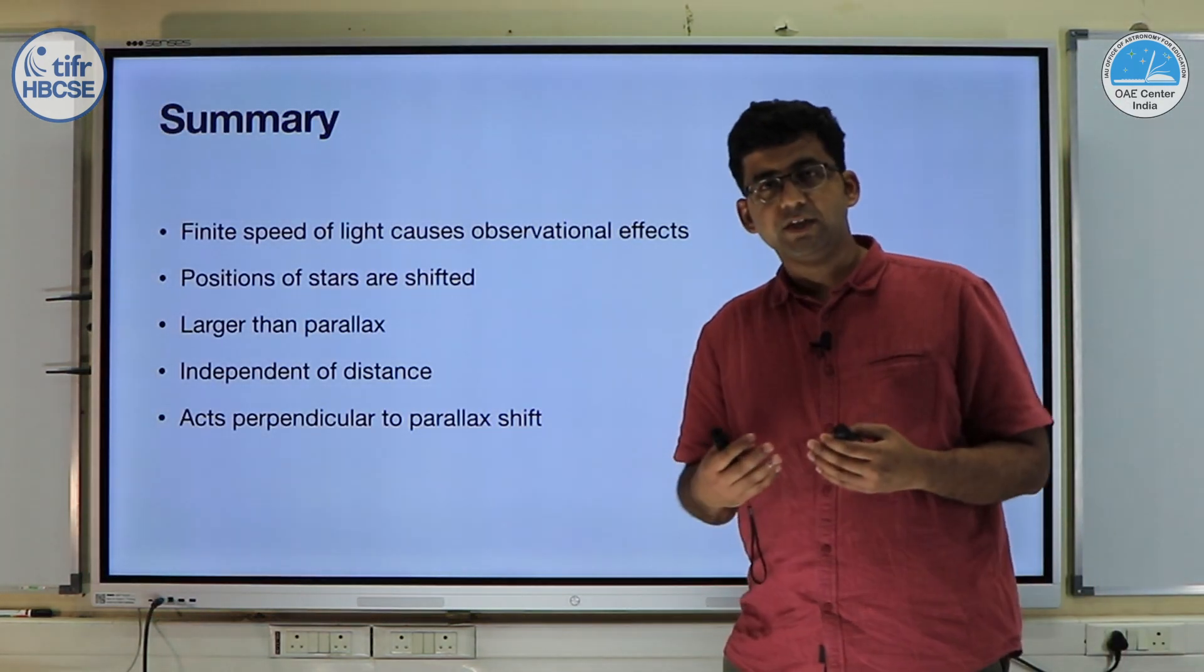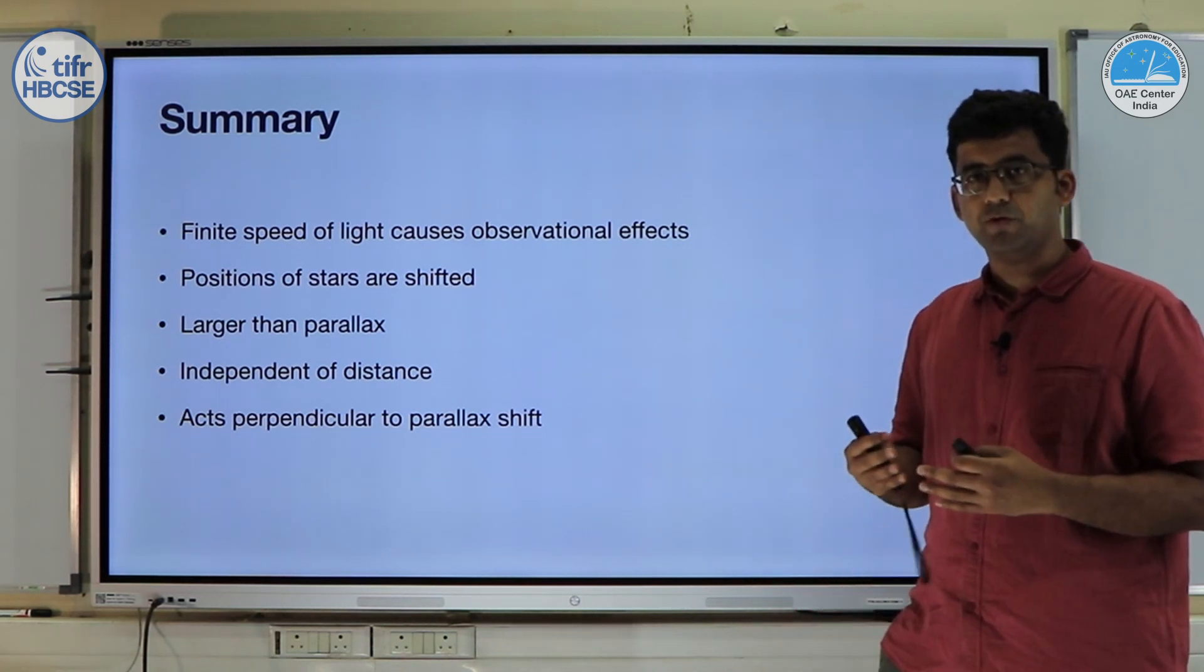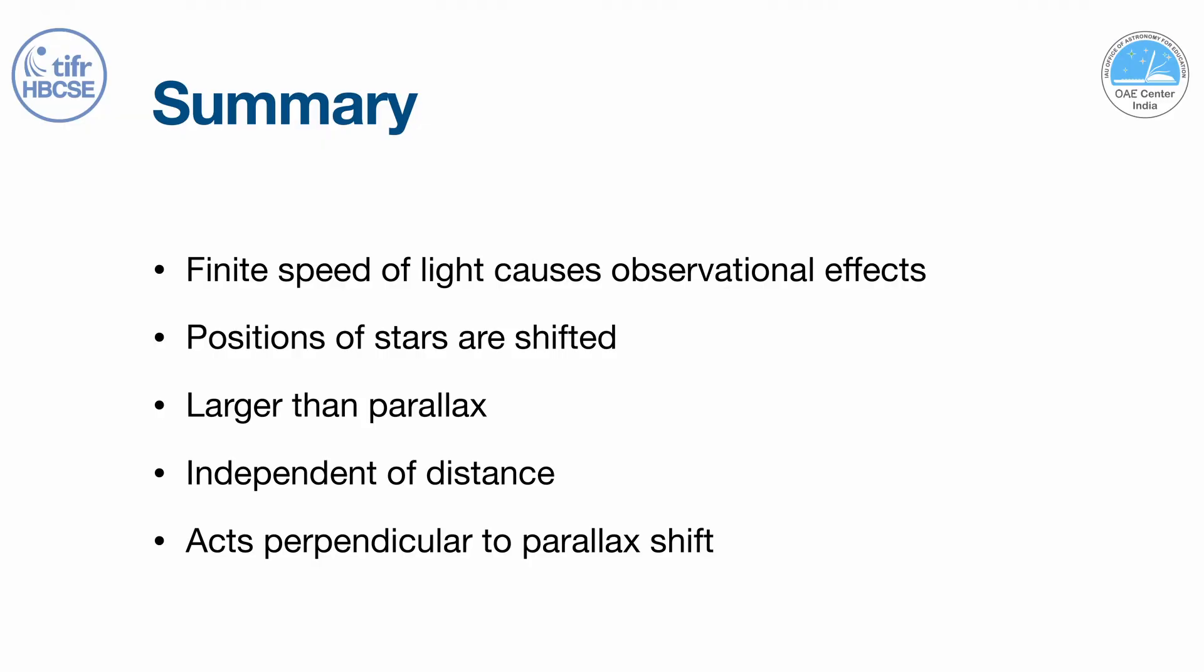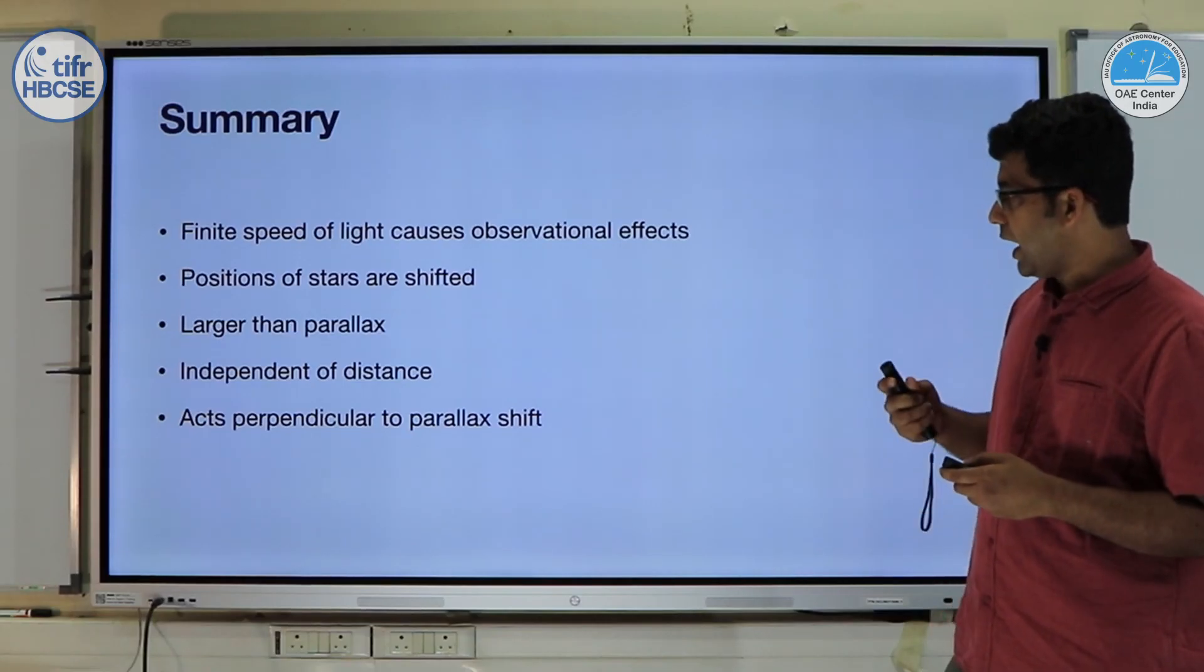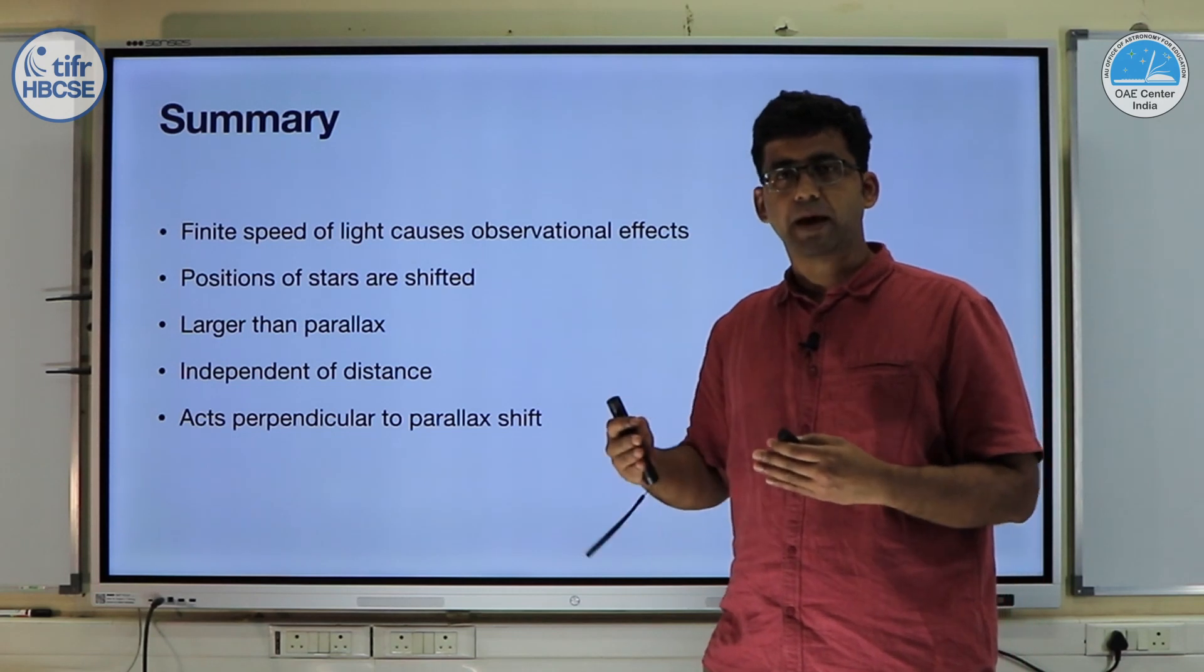So in summary, the finite speed of light causes observational effects which are large and which need to be accounted for if you want to understand the positions of stars. The effect can be much larger than the parallax measurements itself. So it has to be corrected for before you do parallax measurements to measure positions of stars, and this acts independent of distance and is perpendicular to the parallax itself.